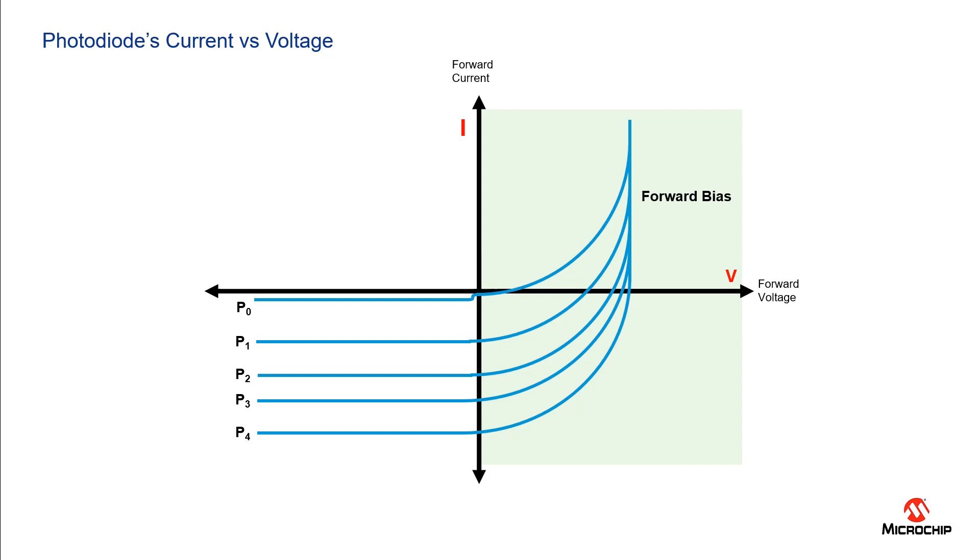This state is also known as forward bias mode and when the voltage is negative this is known as reverse bias mode. So now let's look at the waveforms in the different quadrants.